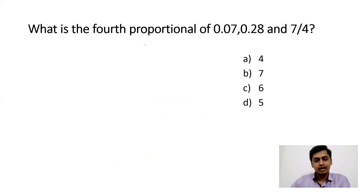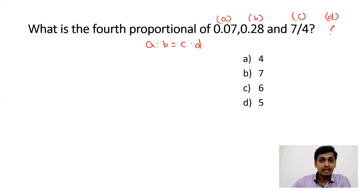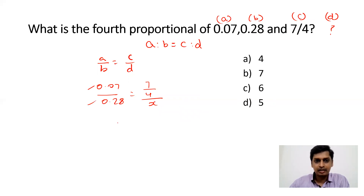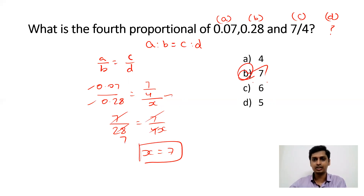Assume four variables where A:B = C:D. Take the first value as A, second as B, third as C, and find the fourth proportion D. So 0.07/0.28 = (7/4)/X. Multiplying numerator and denominator by 100 gives 7/28 = 7/(4X). The 7s cancel and 7 × 4 = 28, so X = 7. The fourth proportion of 0.07, 0.28, and 7/4 is 7.